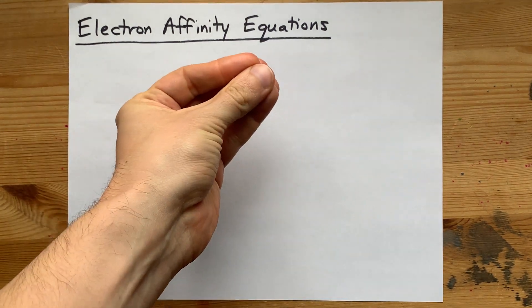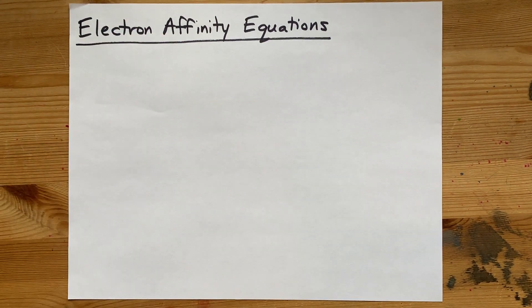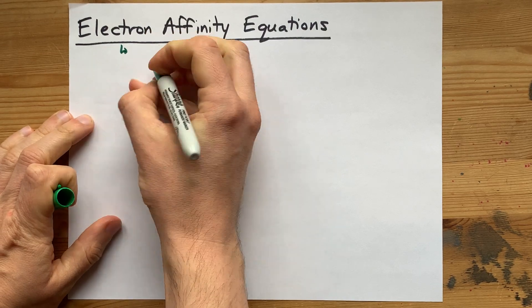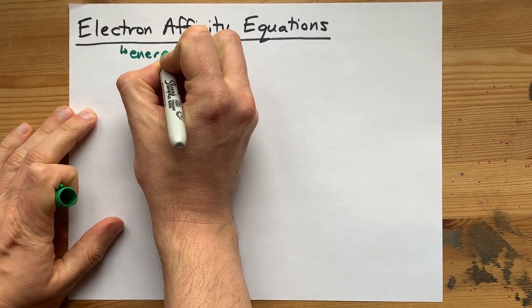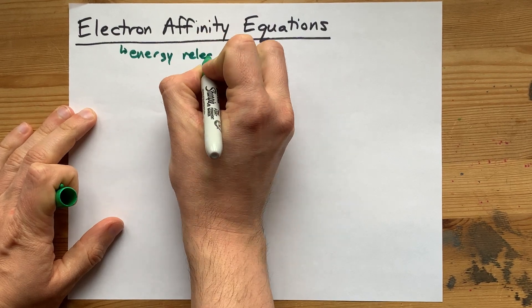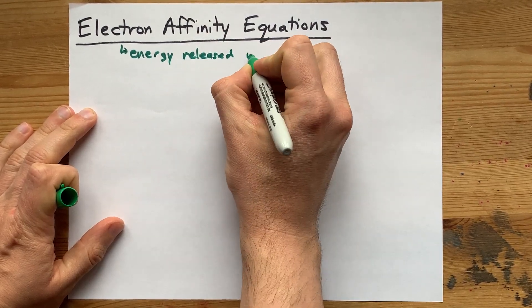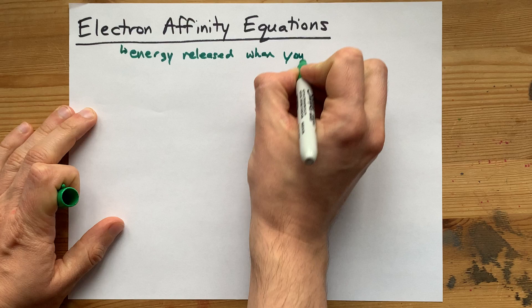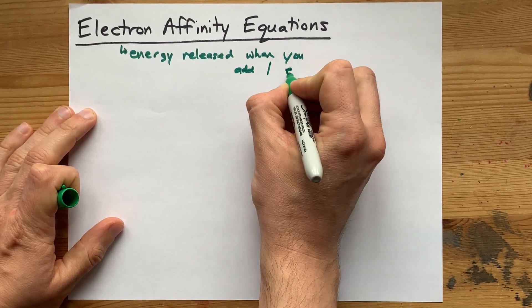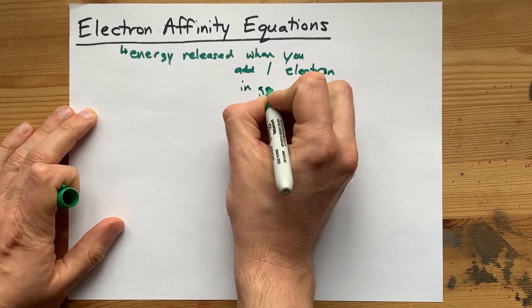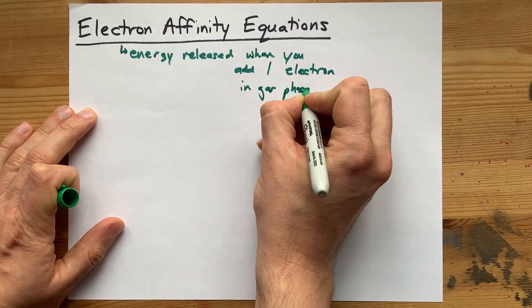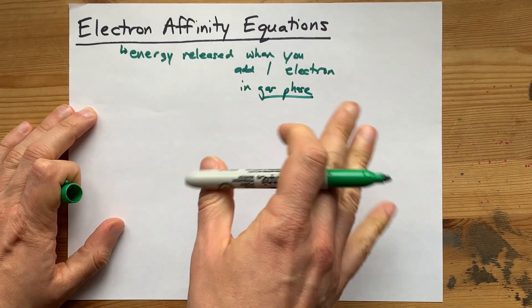How do you write the equations for electron affinity? Electron affinity is defined as the energy released when you add an electron. You add one electron to a particle in the gas phase. The gas phase portion of that is important for the states.